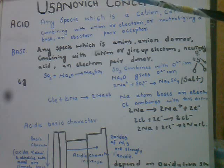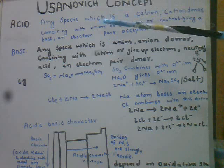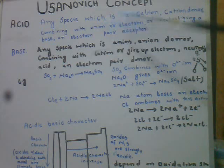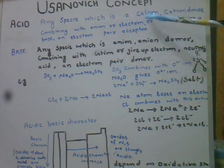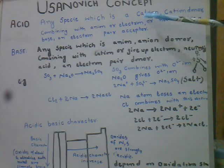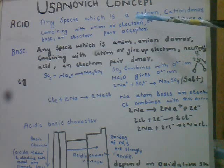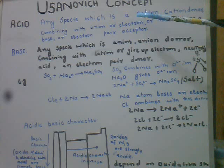Usangi Concept ke mutabiq, Acid woh substance hai jo cation produce kare. Cation matlab woh atom jo electron lose kare aur jis par positive charge aa jaye — use hum cation kehte hain. Group IA ke cations: Group IA mein jitne metals hain...